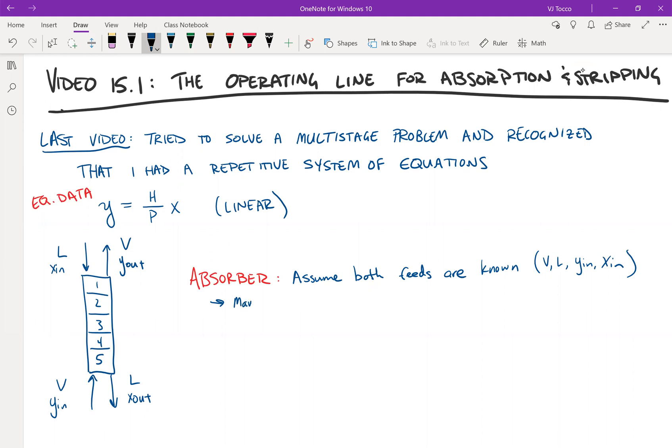So may have to assume pure solvent flow rate L. And that would correspond to x_in would be equal to zero.